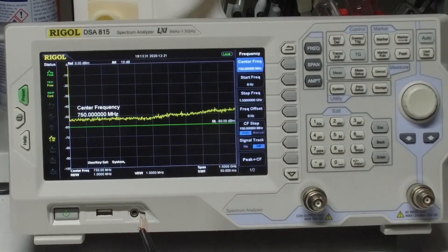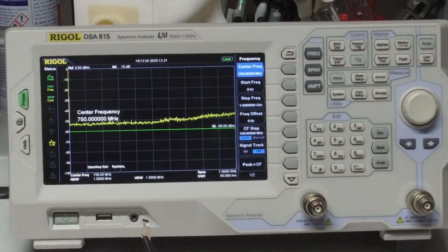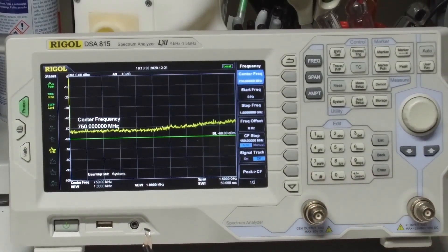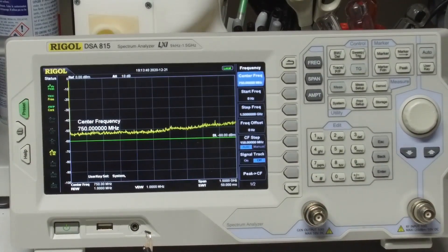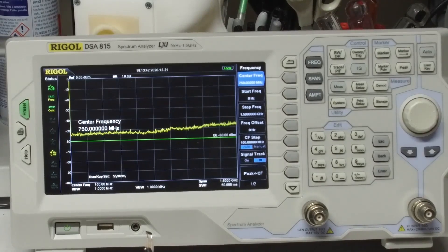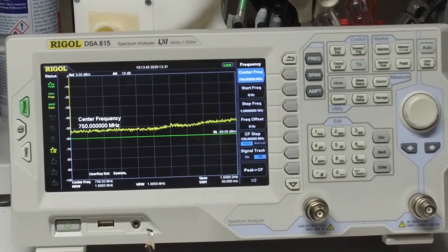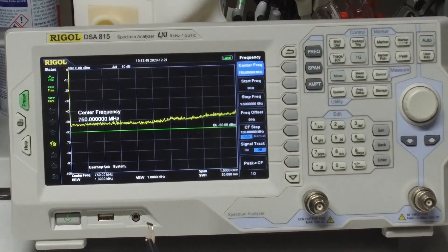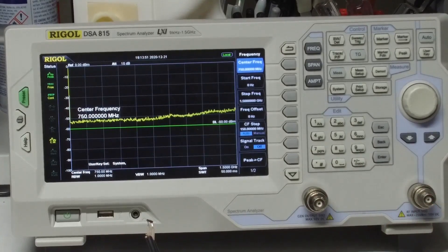The Rigol spectrum analyzer is available with a couple of different options. One of the options is a tracking generator. Now the tracking generator will put out a frequency at the same frequency that the spectrum analyzer's notch is operating at.